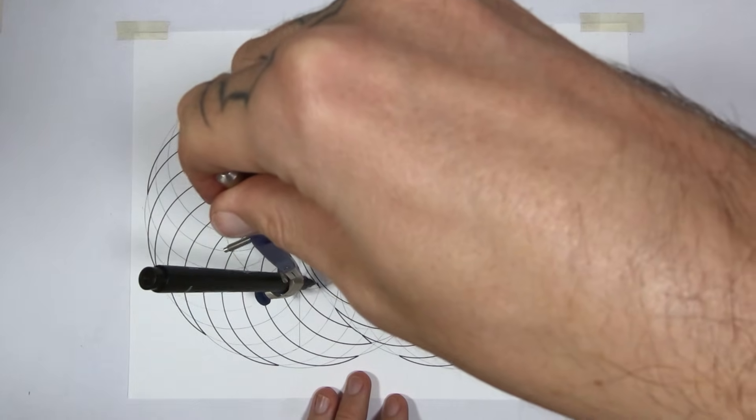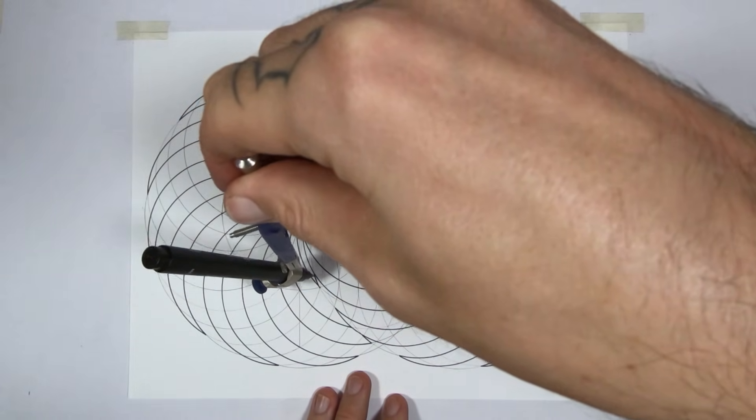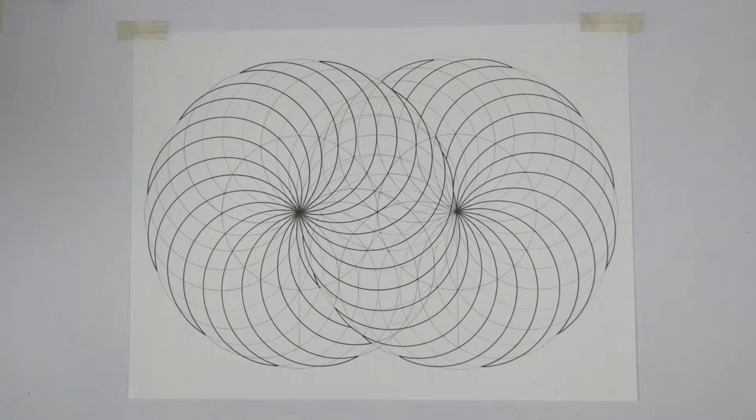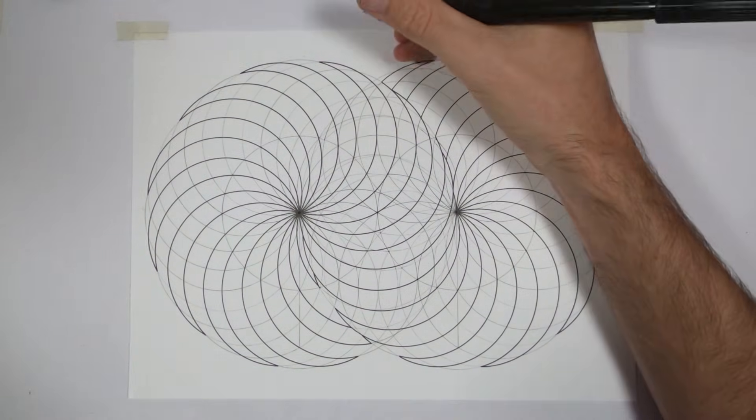That's all the sections closed off and now all that's left to do is to fill in all the black. So I'm going to grab my brush pen and start filling in.